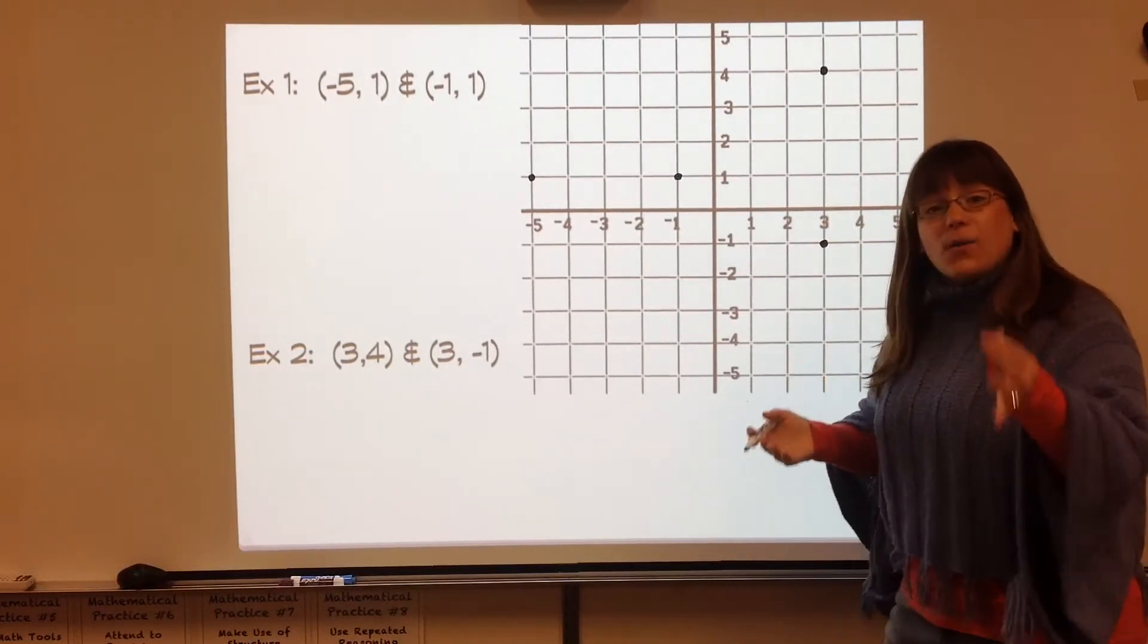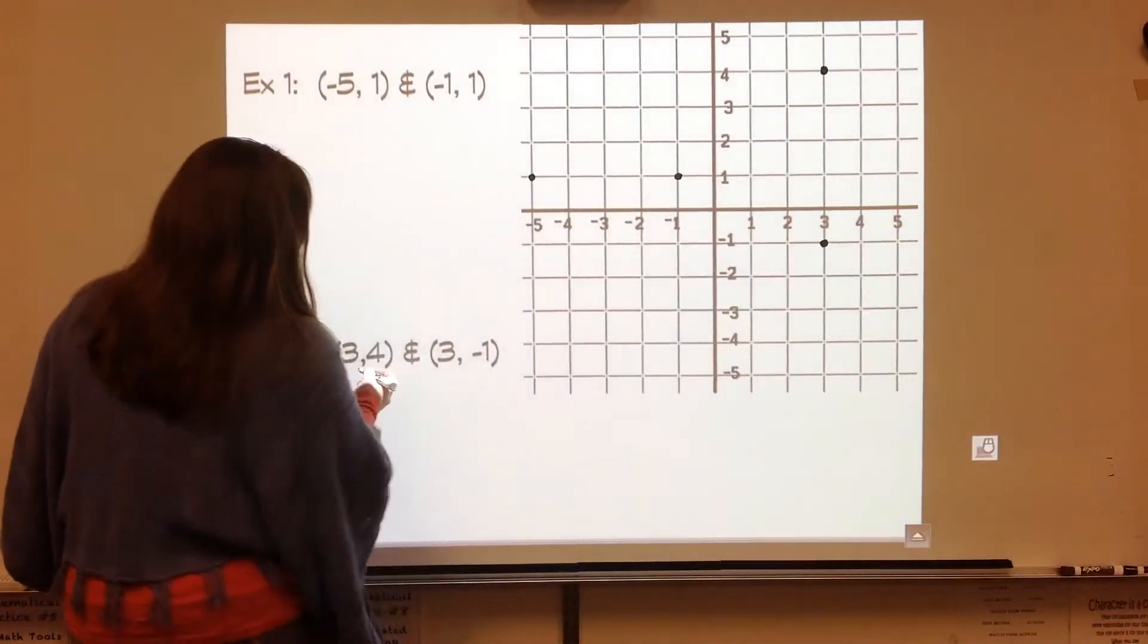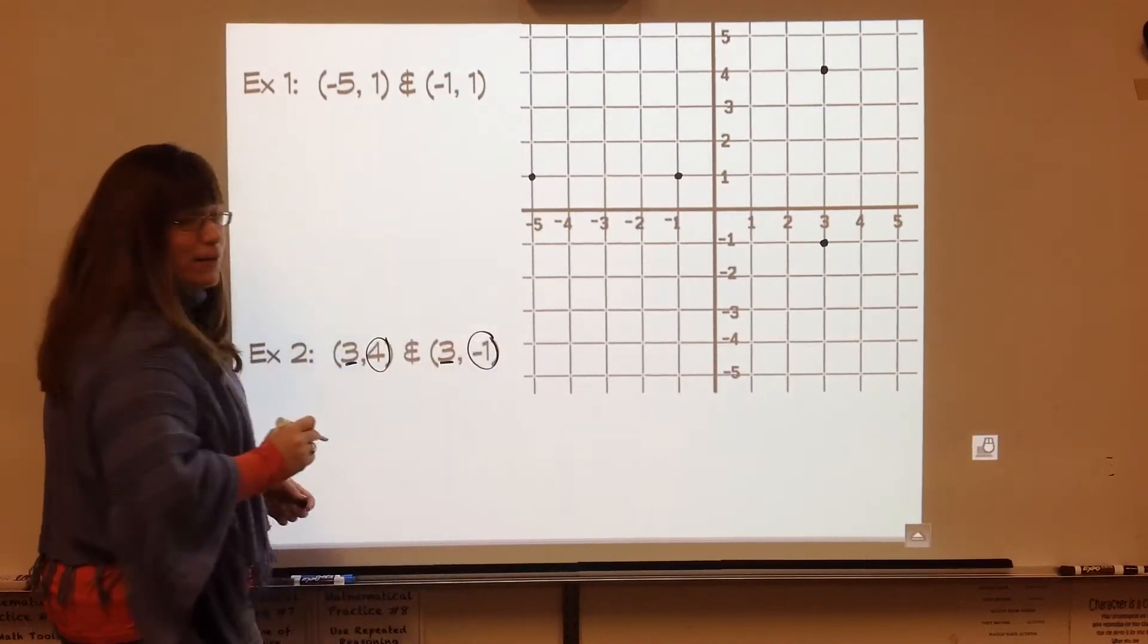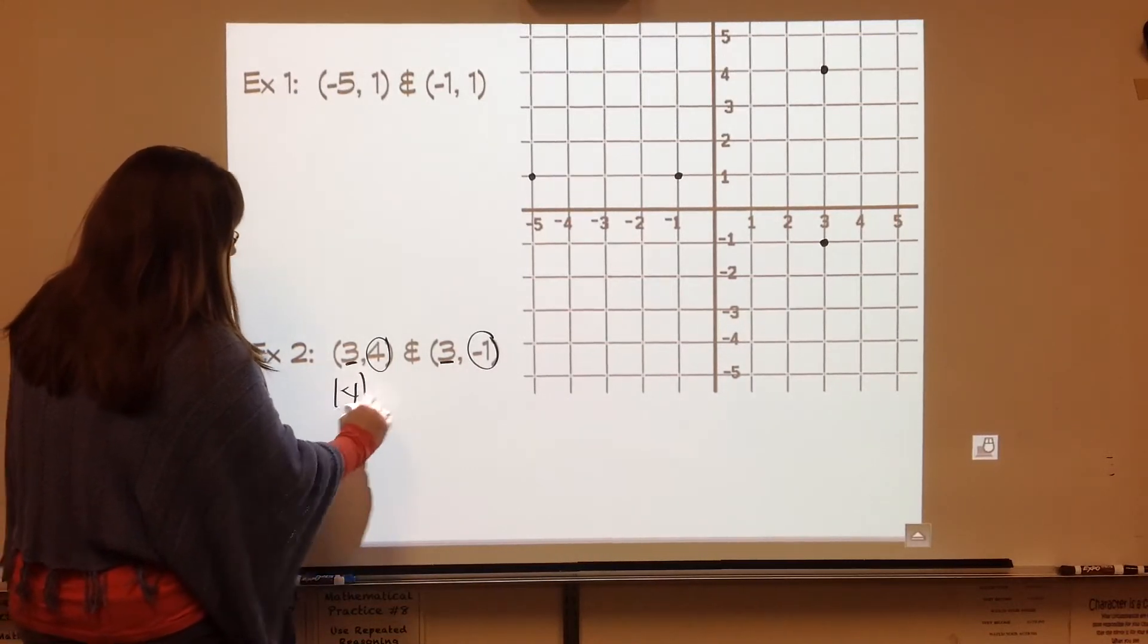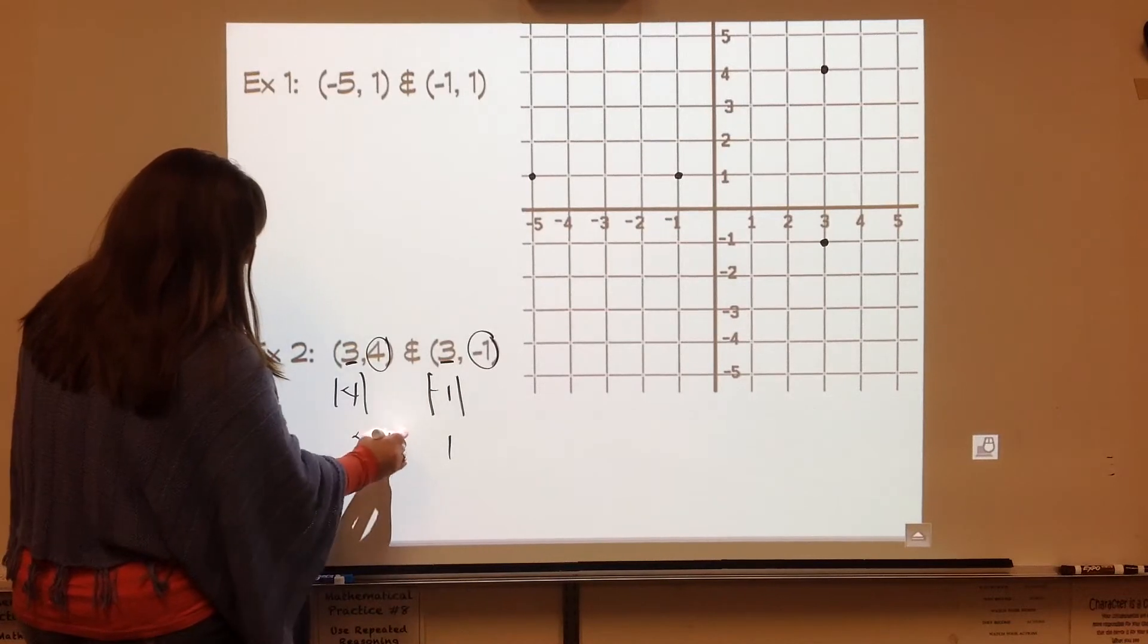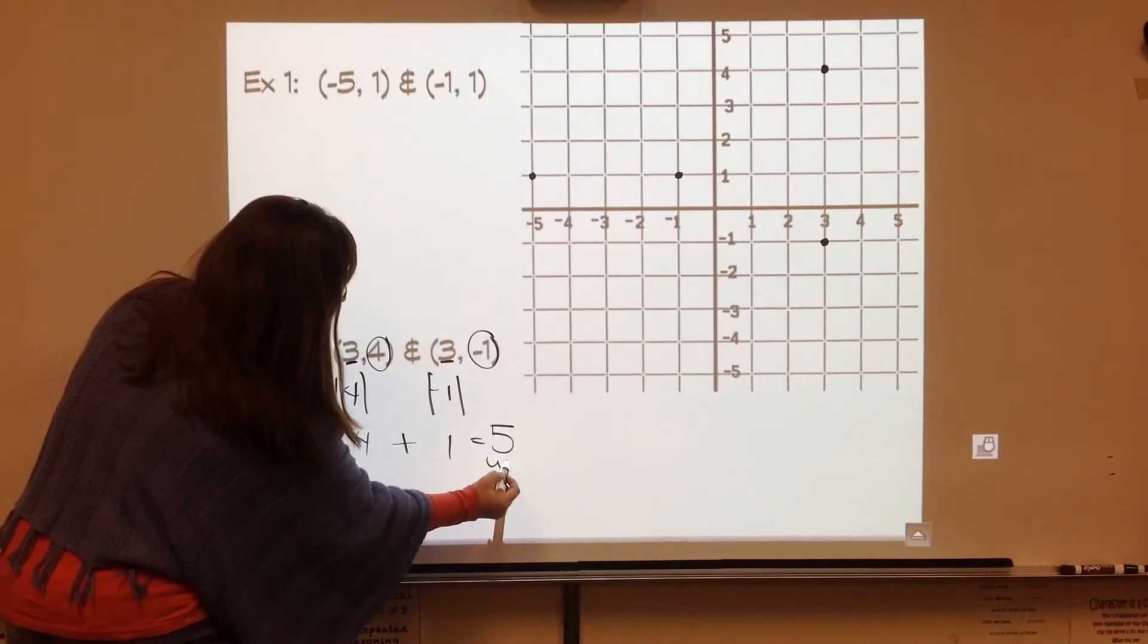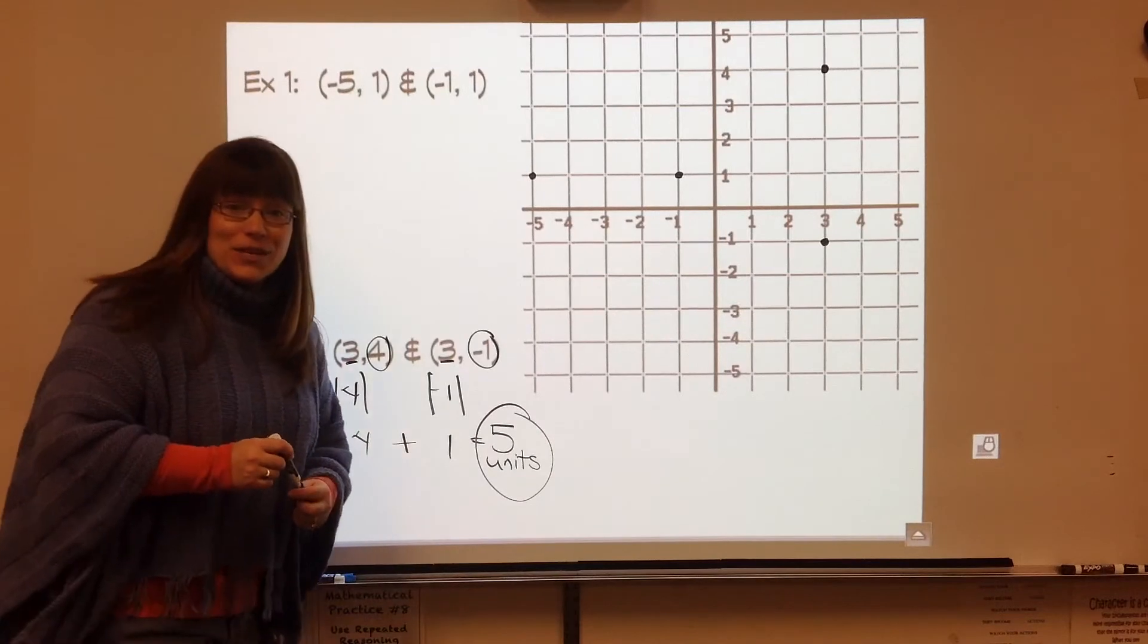However, I want to show you that absolute value trick. Looking at the x and y coordinates, I noticed that the threes are the same. So I'm going to take the four and the negative one, and I'm going to find the absolute value of each number. I have a four and I have a one, and I'm going to add them now. And that will give me the same answer that I found when I counted of five units.